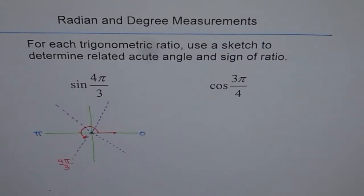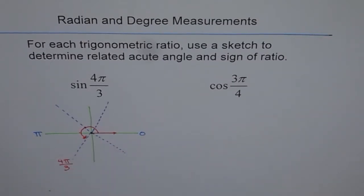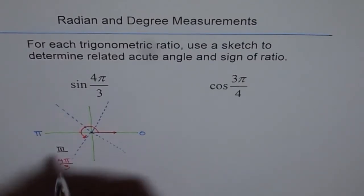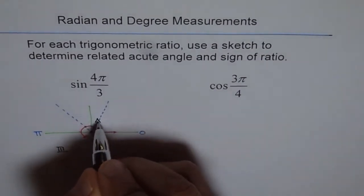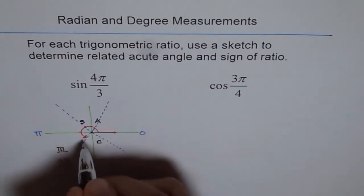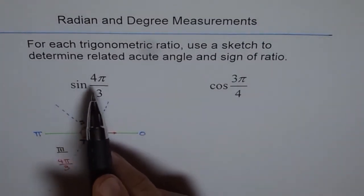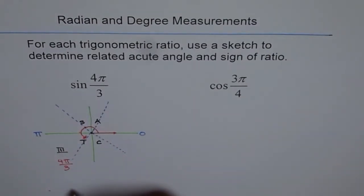This is our principal angle. Now, we know it is in quadrant number 3. From the CAST rule, we know cosine is positive here. All are positive. Sine is positive and tan is positive. And therefore, sin 4π by 3 is negative. That is one thing we know now.